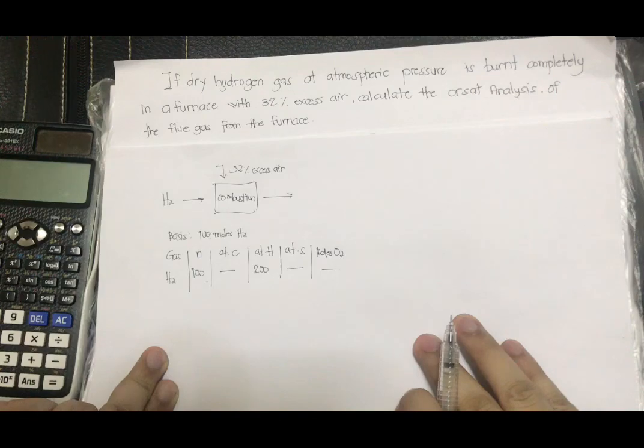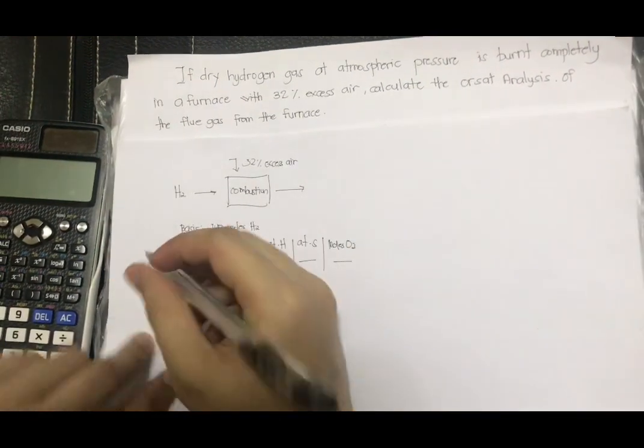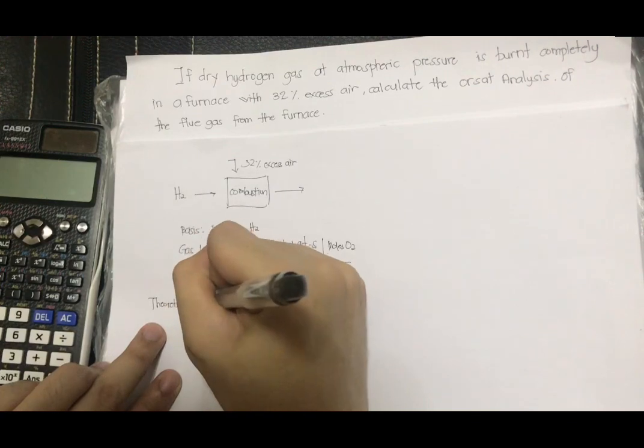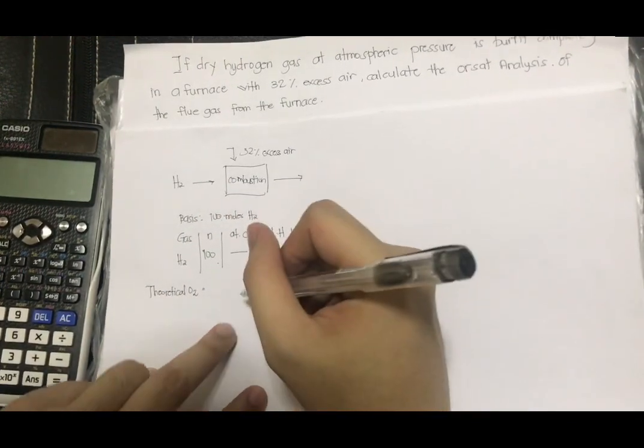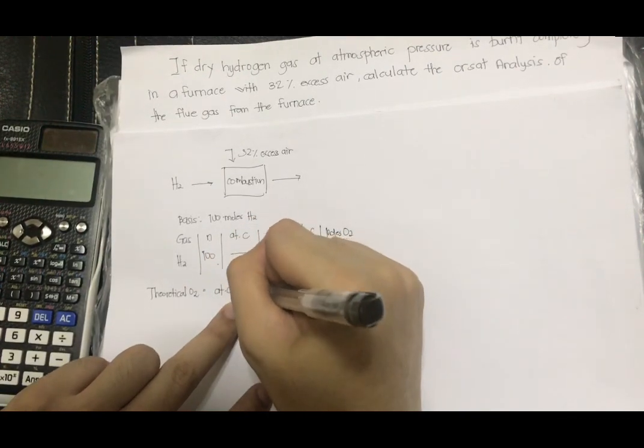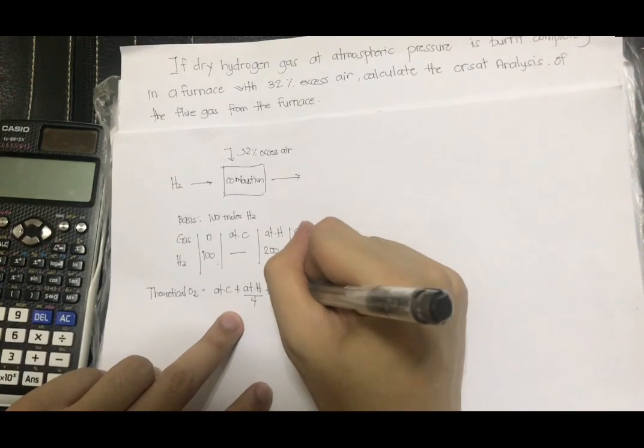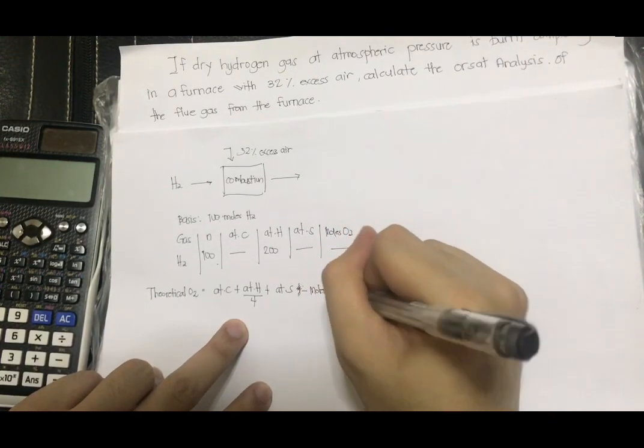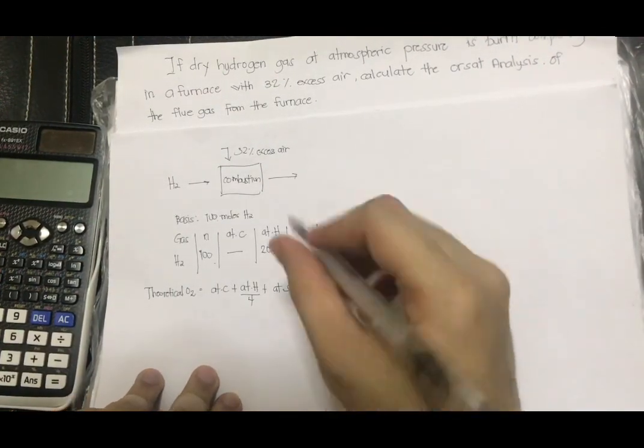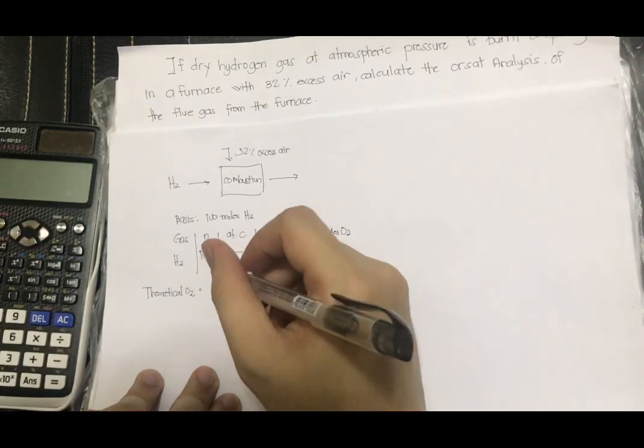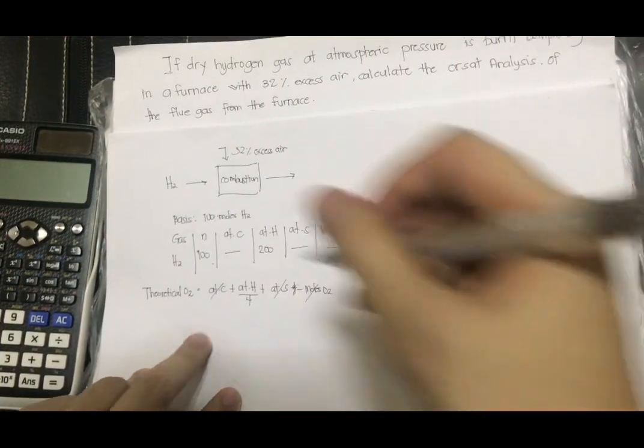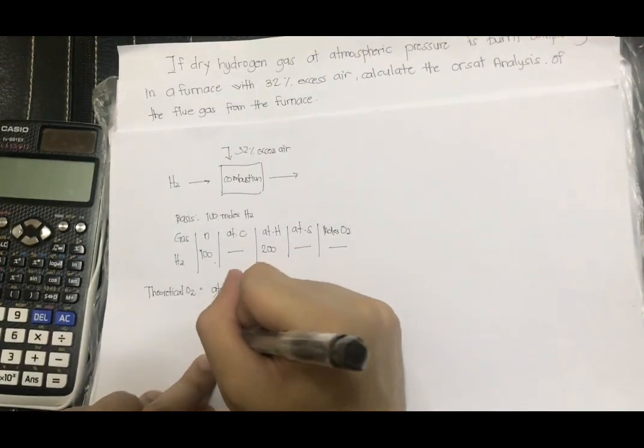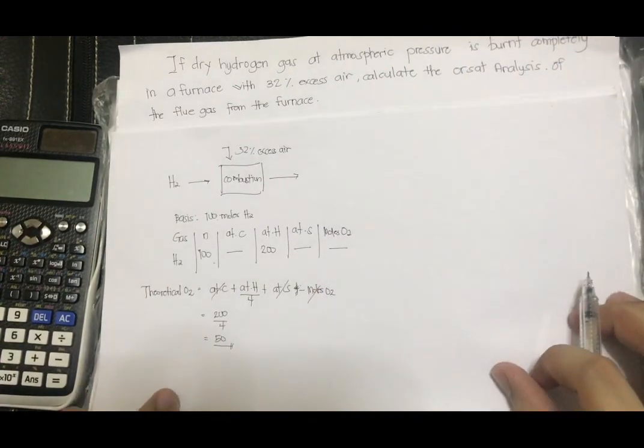So next, let's proceed to our formulas. Our first formula is the theoretical O2. The formula for theoretical O2 is at C plus at H over 4 plus at S plus or minus moles O2. Since we don't have moles O2, sulfur, or carbon, what remains is just at H over 4. Our at H is 200, so 200 over 4. 200 divided by 4 equals 50. So 50 is our theoretical O2.